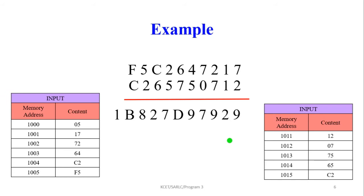Now we explain with an example. Here we are taking 5 bytes of data. The SI value is initialized with 05 as the count value at address 1000. The first data is loaded: memory location 1001 contains 17, 1002 contains 72, 1003 contains 64, 1004 contains C2, 1005 contains F5. The second data: 1011 contains 12, 1012 contains 07, 1013 contains 75, 1014 contains 65, 1015 contains C2.